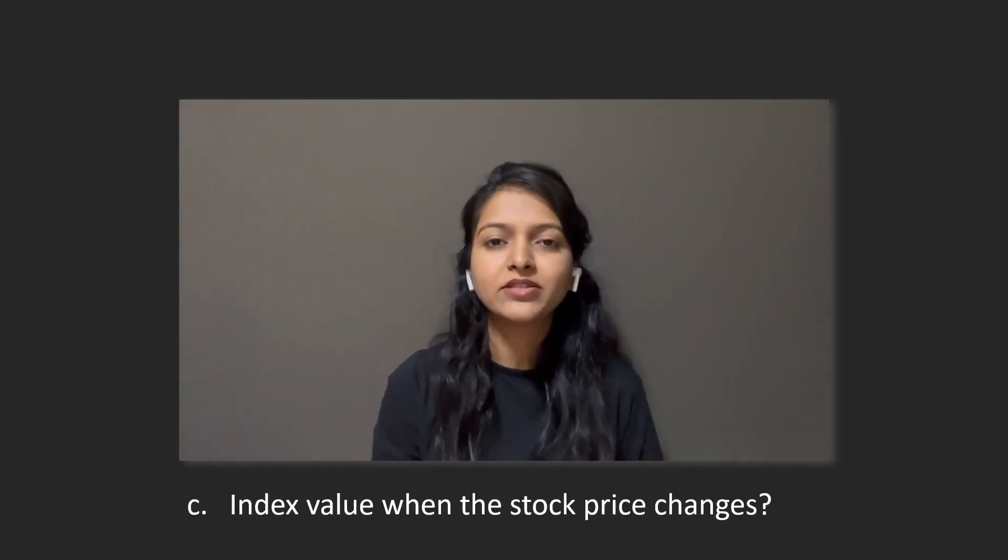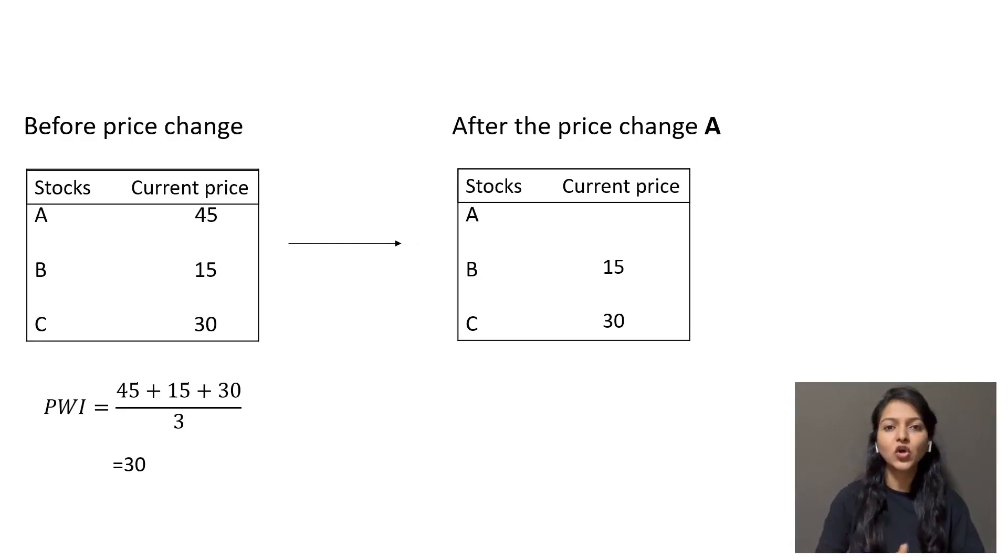Now we will have to see how the index value changes as stock price changes. Assuming stock A price rises by 20% due to some positive news, which comes to 54, on the basis of this change our updated price index value now is 33.